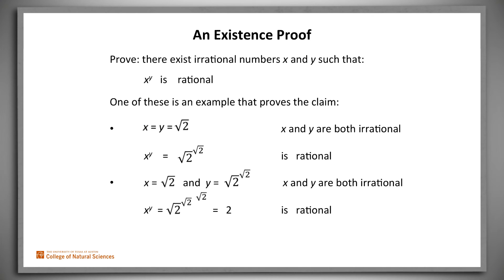For example, constructivists wouldn't accept our proof that there exists an x and a y that satisfy our claim. For them, a proof of such a claim must exhibit either specific values or a procedure for finding such values.